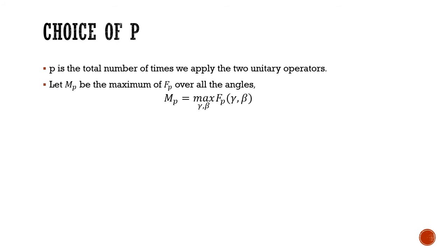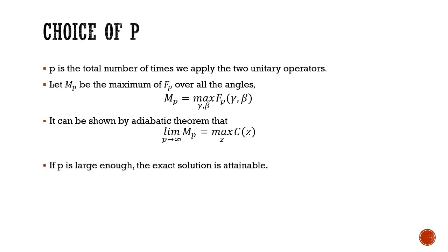Now, the question is, how do we choose P? P is the number of rounds of optimization. Let's say M_p is the maximum value of F_p, or the maximum value of the state vector for the angles gamma and beta. From adiabatic theorem, we can prove that M_p as P tends to infinity is max of C(z). So if P is large enough, we can obtain an exact solution. But if we give P a finite number of steps or a finite cutoff, we can reach an approximate solution.